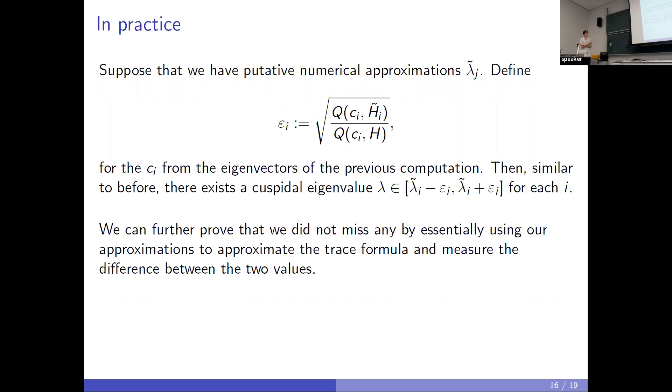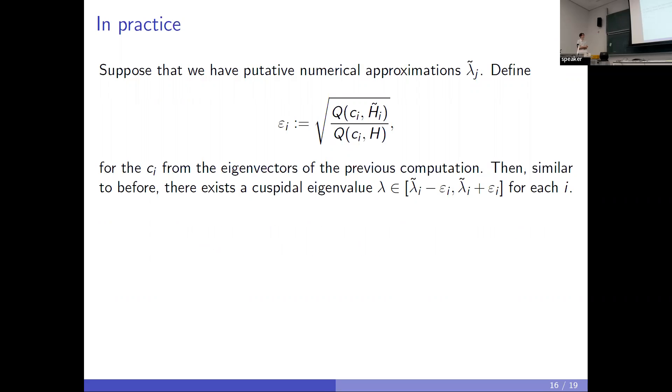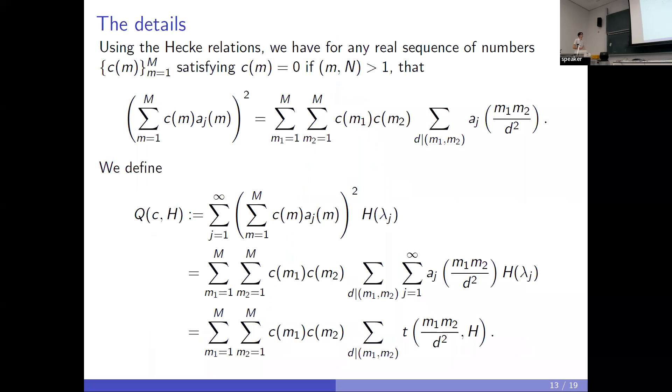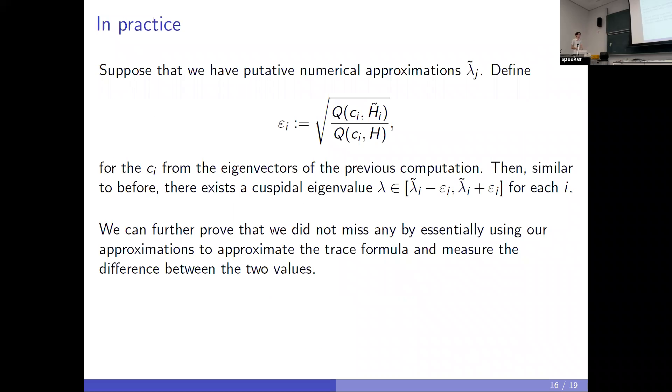On top of this, we can further prove that we didn't miss any. Once you have a bunch of approximations, we can use it to approximate one of the trace formula values, and then test the difference between our known value of the trace formula plus this finite sum. The error of that can give us how far along we've completed the computation. So we can find out if we've missed any. On top of this, we can also get rigorous error bounds in the Fourier coefficients, but it takes a bit too long to describe.